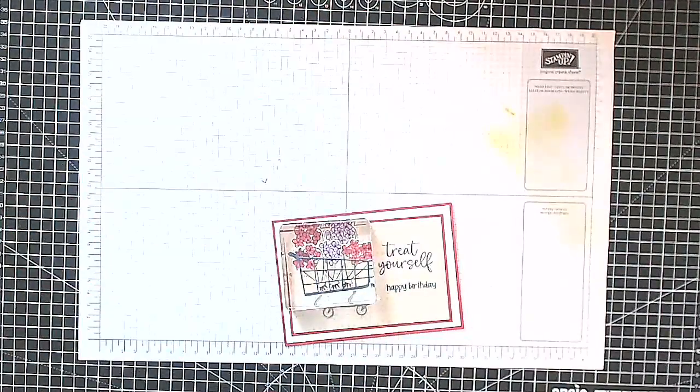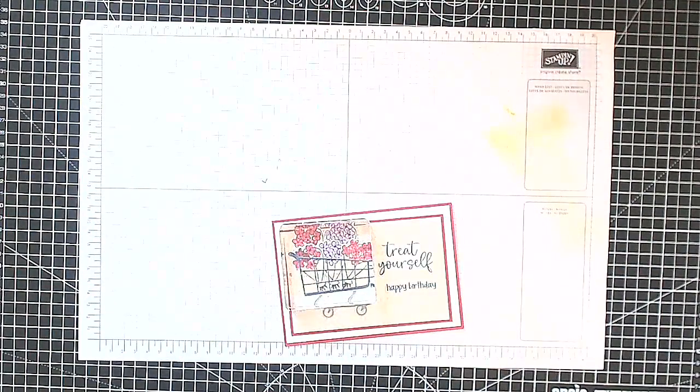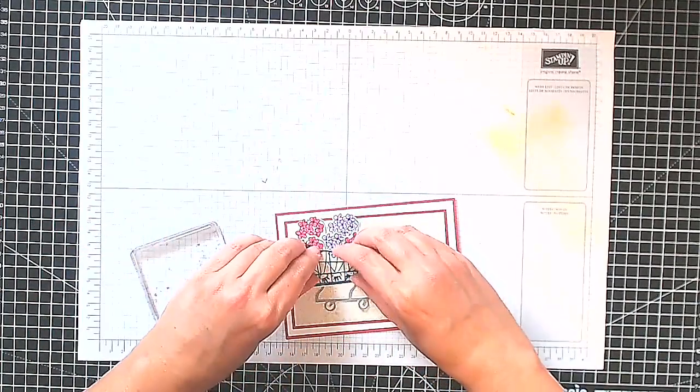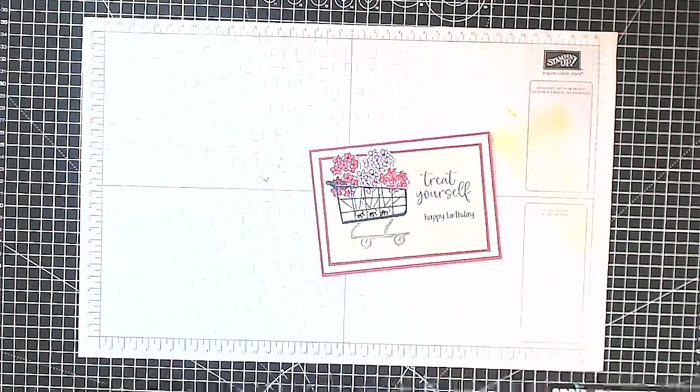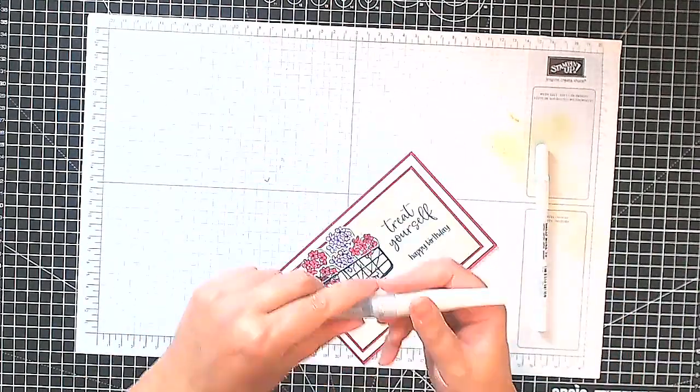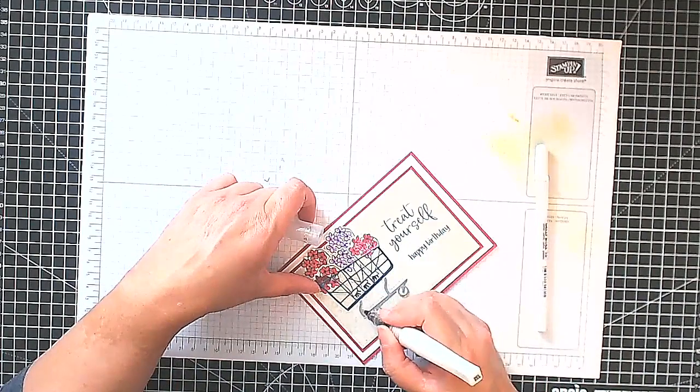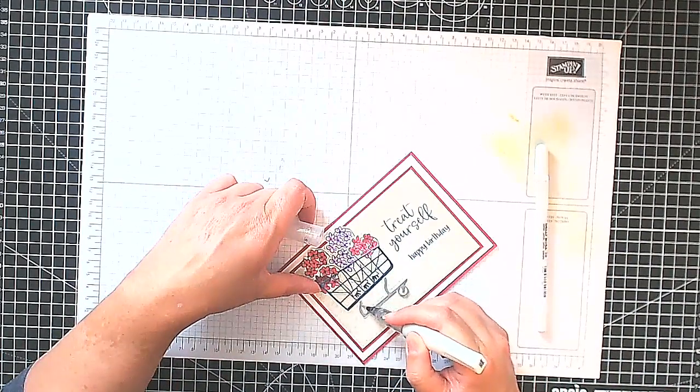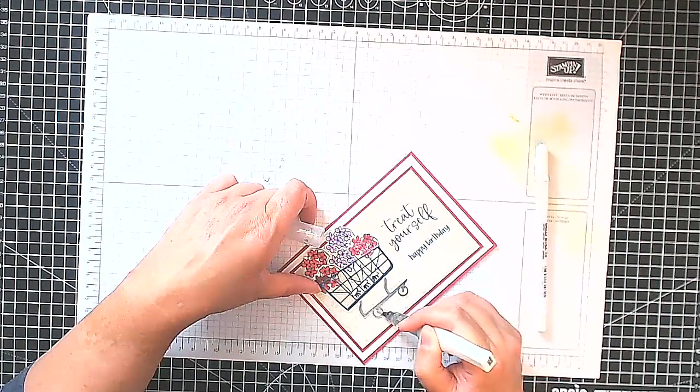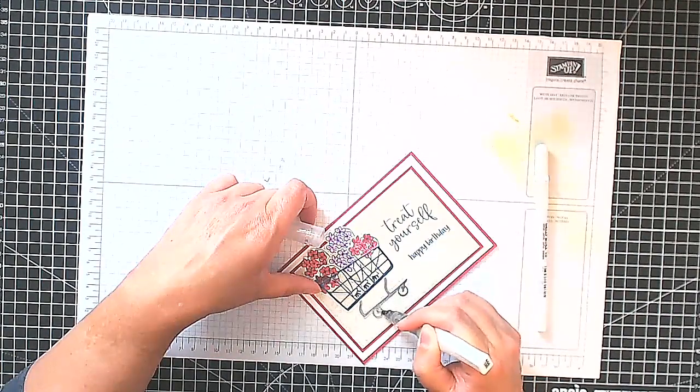Clear the decks a little bit and remove the block. Everything should be nicely stuck down there. Now we are going to use our Wink of Stella and I'm just going to trace around the trolley, so the wheels and the base of the trolley. This is a clear Wink of Stella and this will just give it a little bit of a shimmer.